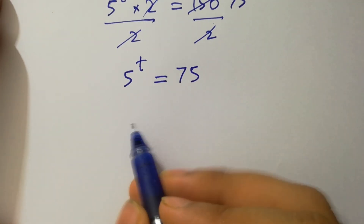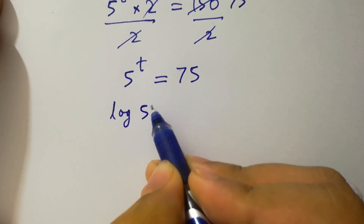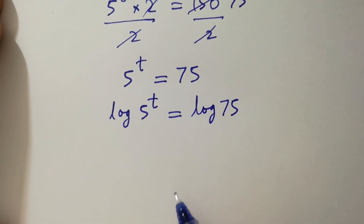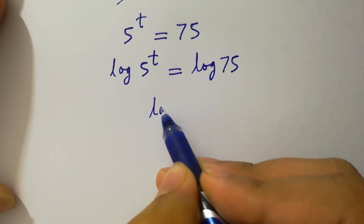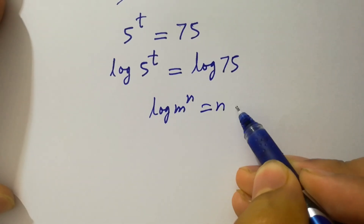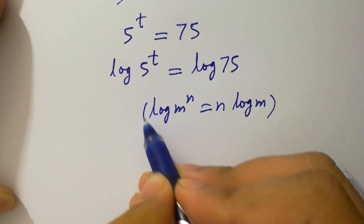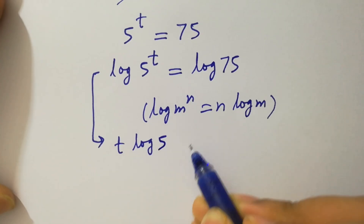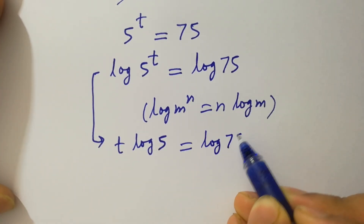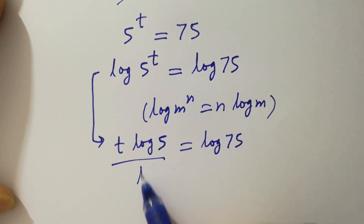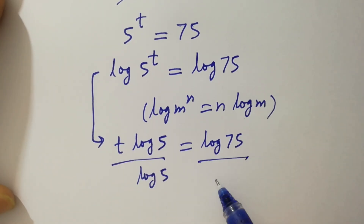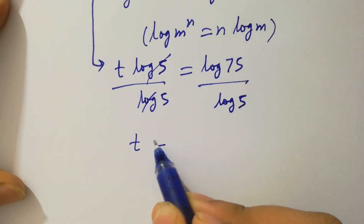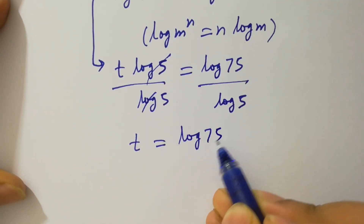Take log on both sides. Log 5 to the power t equals log 75. Since log m to the power n equals n log m, it will be t log 5 equals log 75. To find t, divide by log 5 on both sides. Log 5 and log 5 cancel, giving t equals log 75 over log 5.